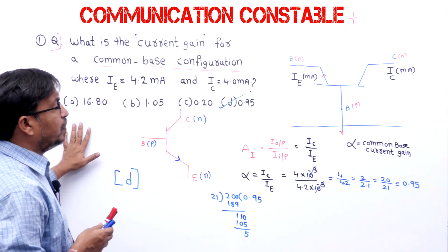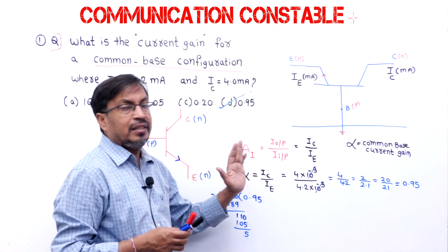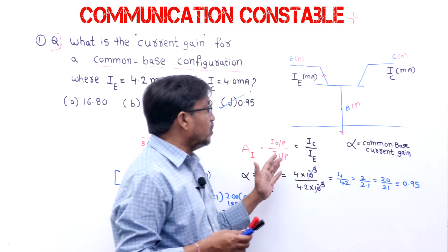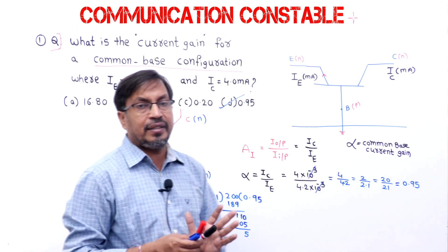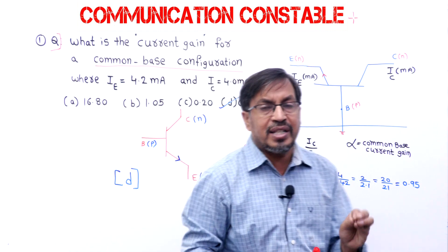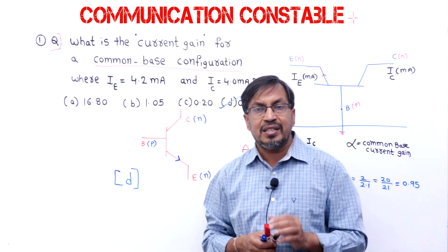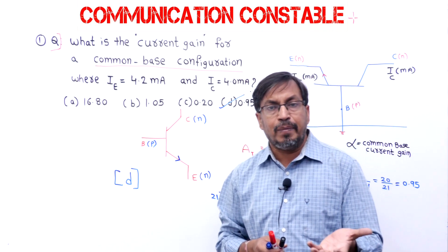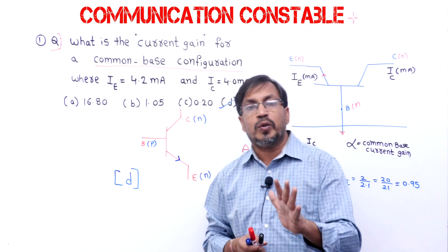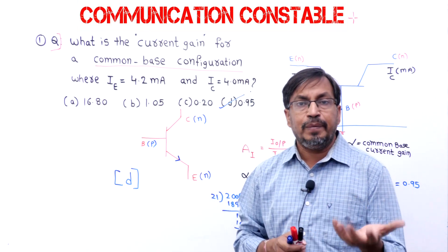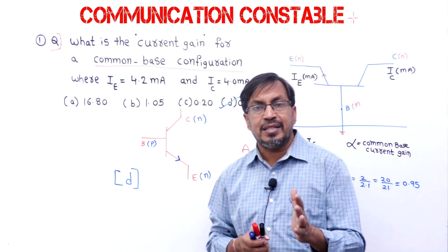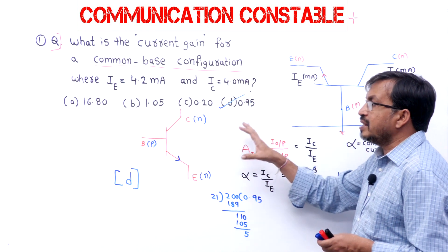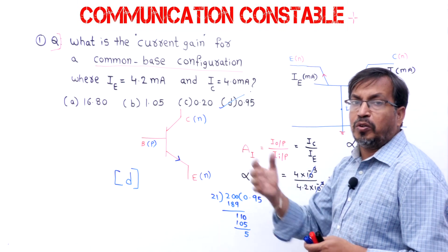Current gain means output current by input current. In common base, current gain alpha equals IC by IE. Remember, alpha is always less than 1, because the denominator is IE. What is IE? Emitter current IE equals IB plus IC, where IB is base current. So according to our question, option D is correct.